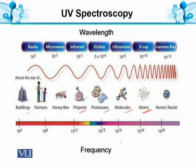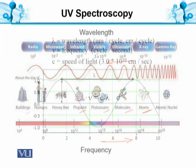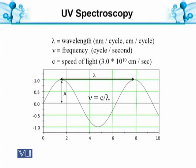On the other side is frequency. Wavelength increases in one direction, and frequency increases in the opposite direction — vice versa, left to right. This means wavelength and frequency are in opposite directions and are inversely proportional. Wavelength units are nanometers per cycle or centimeters per cycle. Frequency, which we call cycles per second, and the speed of light is 3.0 multiplied by 10 to the power of 10 centimeters per second, or 10 to the power of 8 meters per second.